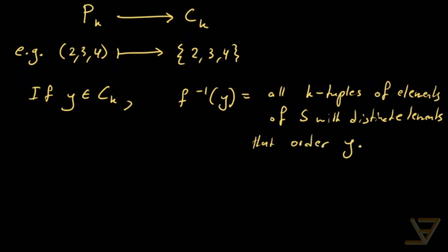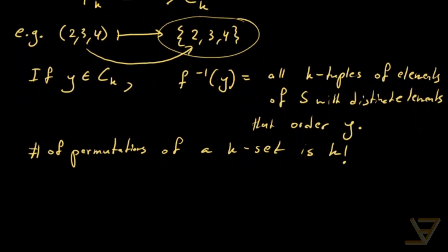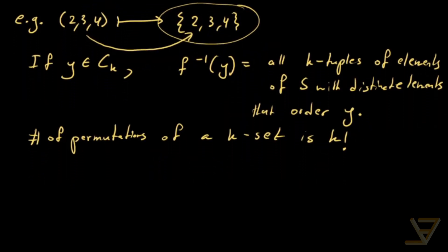that order y. So we're basically ordering this thing and that ordered version maps to the original. But we know that the number of permutations of a k-set is k factorial. This is a version of the formula for number of permutations.